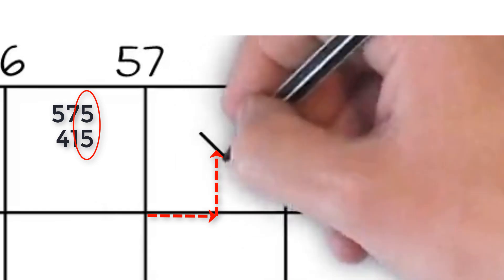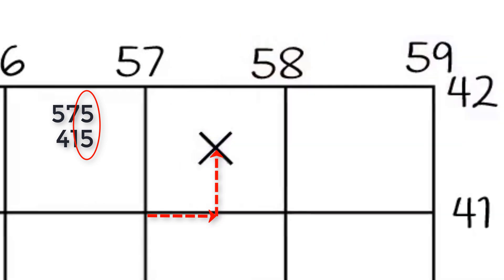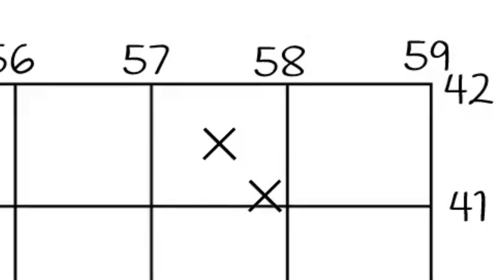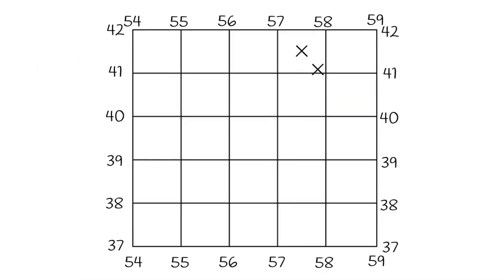This places your point right about here. Had the coordinate instead been a different value, it would instead be right 7 and then up 1, placing the coordinate here. Make sense? Now you try — where would the point 552418 be on this map? If you said right about here, you would be correct. You now know how to plot a six-digit grid. Congratulations.